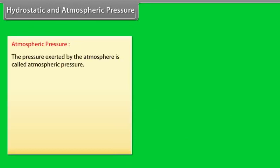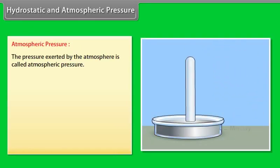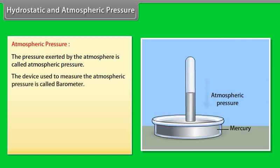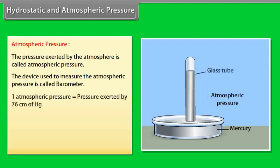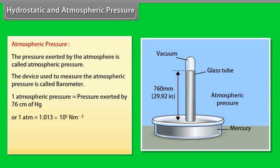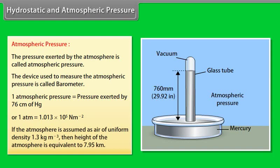Atmospheric pressure is the pressure exerted by the atmosphere. The device used to measure atmospheric pressure is called a barometer. One atmospheric pressure is equal to the pressure exerted by 76 cm of mercury, or 1.013 × 10⁵ N/m².